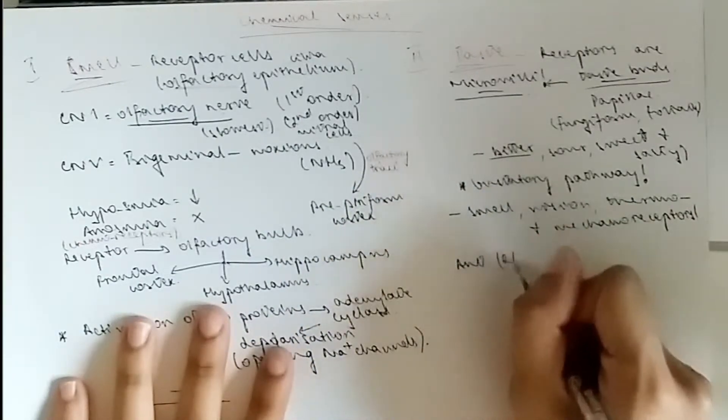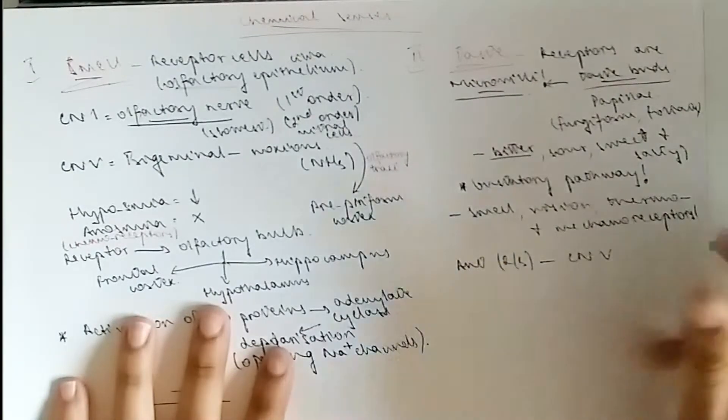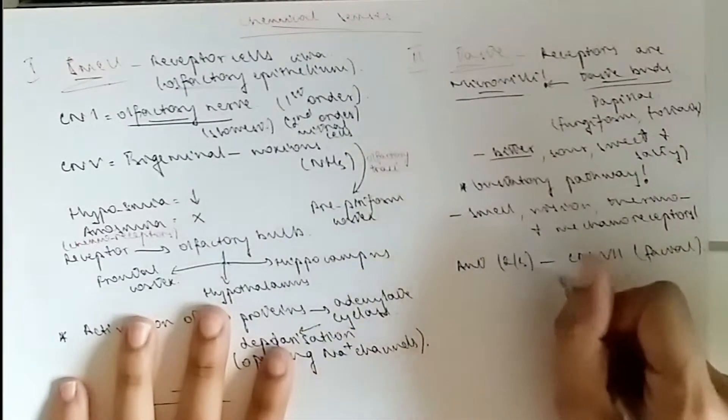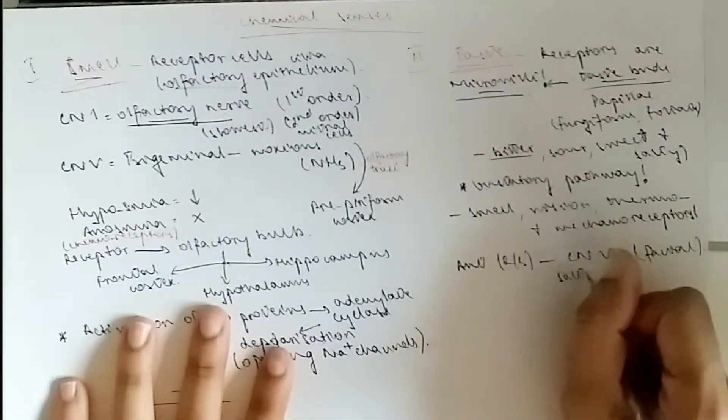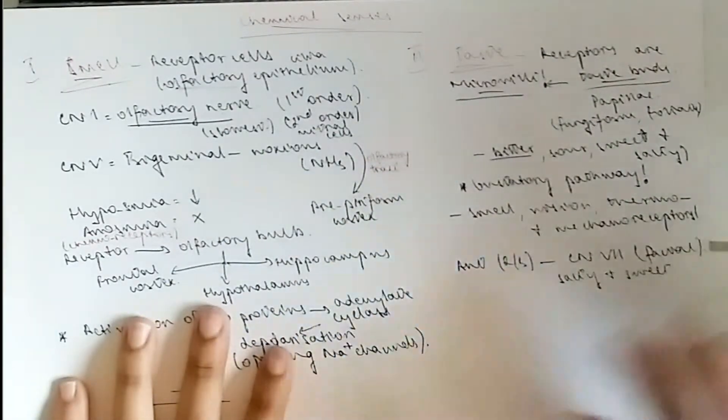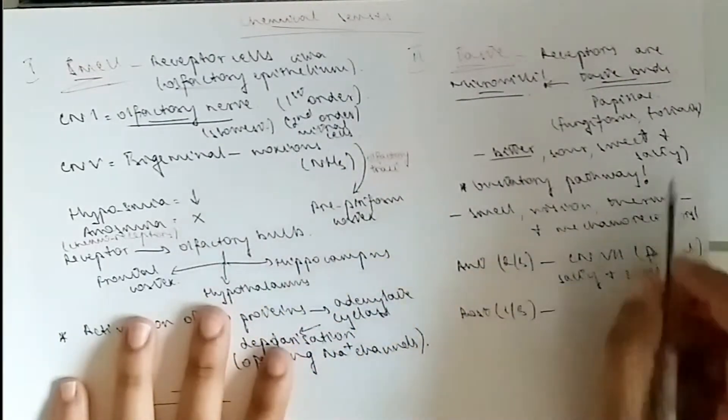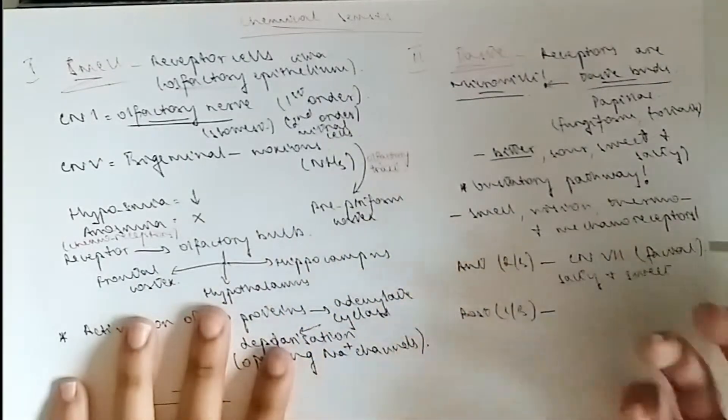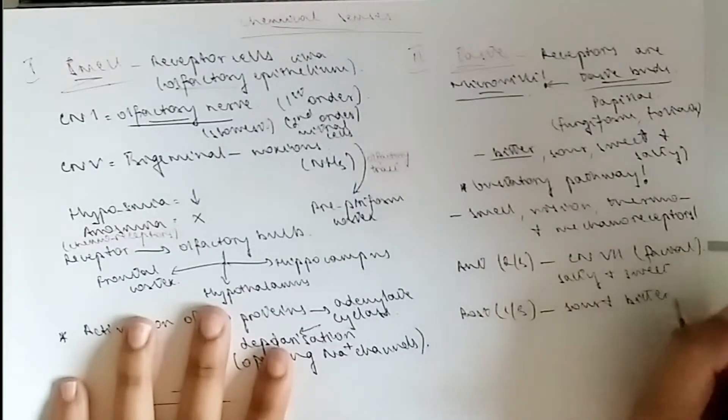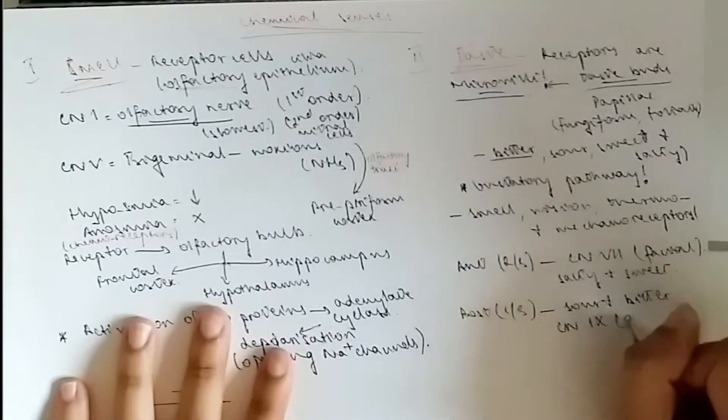Now the innervation is very important. It's not by one single nerve but by two nerves. The anterior two-thirds is by the seventh cranial nerve, which is the facial nerve through the chorda tympani. It is for salty and sweet, as I mentioned, the anterior fungiform papillae. The posterior one-third is by the glossopharyngeal nerve, which is cranial nerve number nine, and it's for sour and bitter. The posterior part to that, the palate and such, is by the vagus nerve, but that is not for taste.